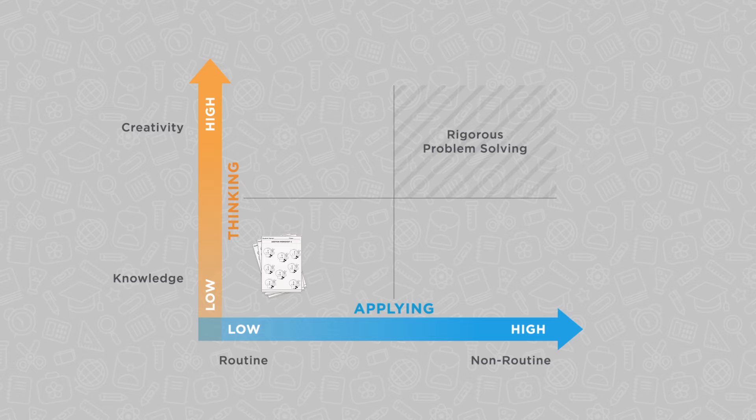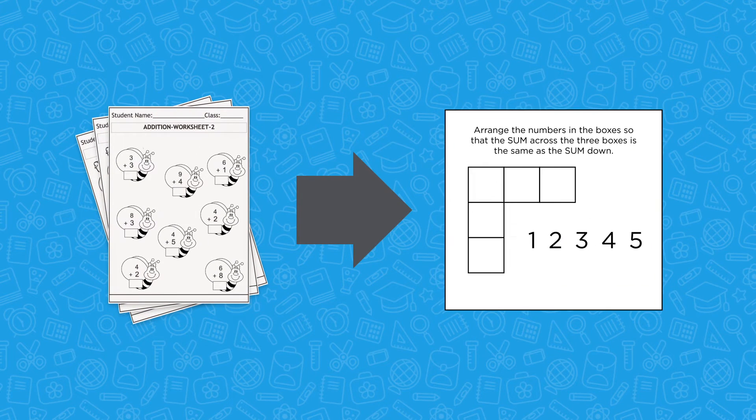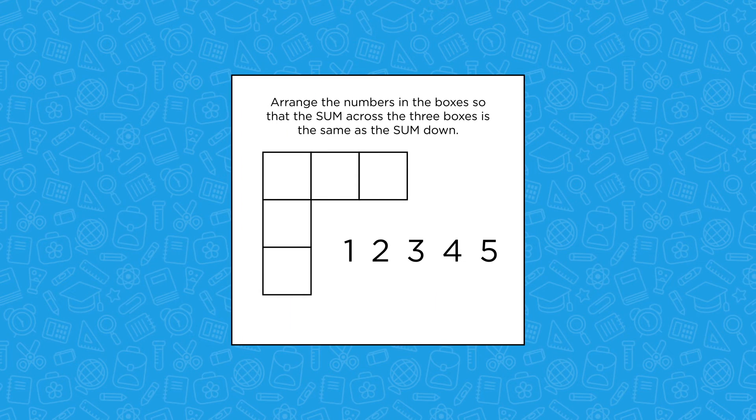First, let's look at how we can modify the content. We'll take this simple first-grade addition from the worksheet and change it to this more open-ended question: Arrange the numbers 1 through 5 in these boxes so that when you add the numbers horizontally, you get the same sum as adding the numbers vertically.